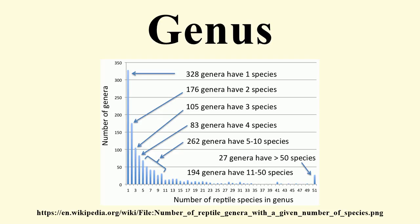Type. Each genus should have a designated type, although in practice there is a backlog of older names without one. In zoology, this is the type species and the generic name is permanently associated with the type specimen of its type species. Should the specimen turn out to be assignable to another genus, the generic name linked to it becomes a junior synonym and the remaining taxa in the former genus need to be reassessed.